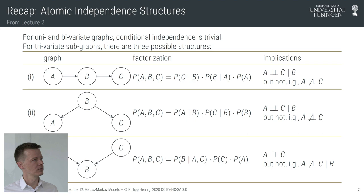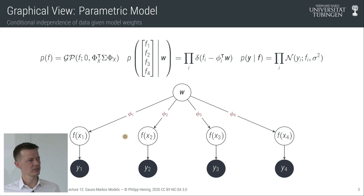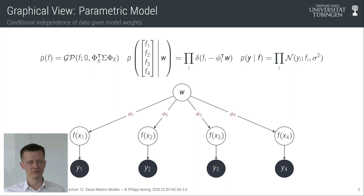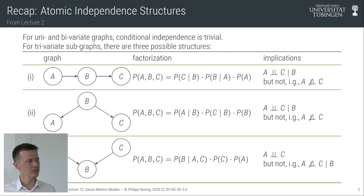In lecture 7, when we did parametric Gaussian regression, we encountered this kind of model — we can now write it in graphical form. We spoke about function values at various locations x1 to xn at which we are collecting data. The data are observed, shown in filled form. We assume these function values are generated by some underlying feature functions weighted with a joint set of weights — the entire explanation of the dataset.